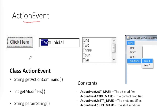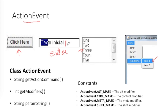ActionEvent is generated in the following cases: when you click on a button, when the cursor is in a text field and you hit Enter from the keyboard, when you double-click any item in a list box, or when you click on a menu item. For example, when you log in and hit Enter directly without pressing the login button, that is also taken as an ActionEvent.